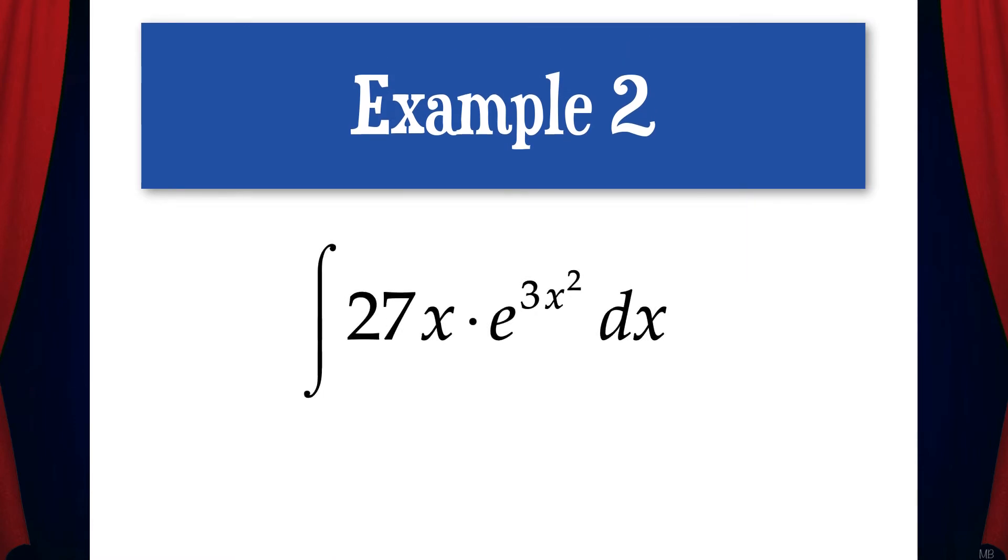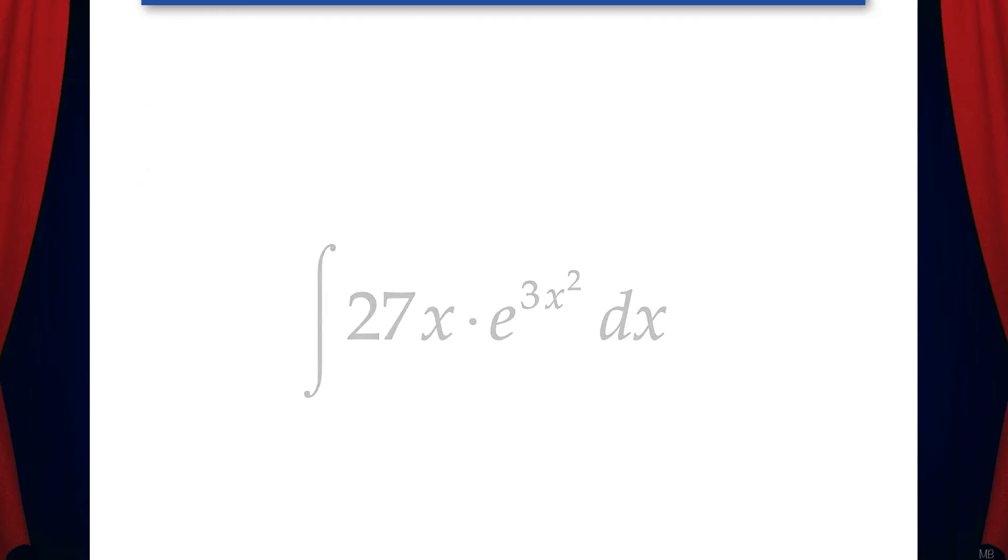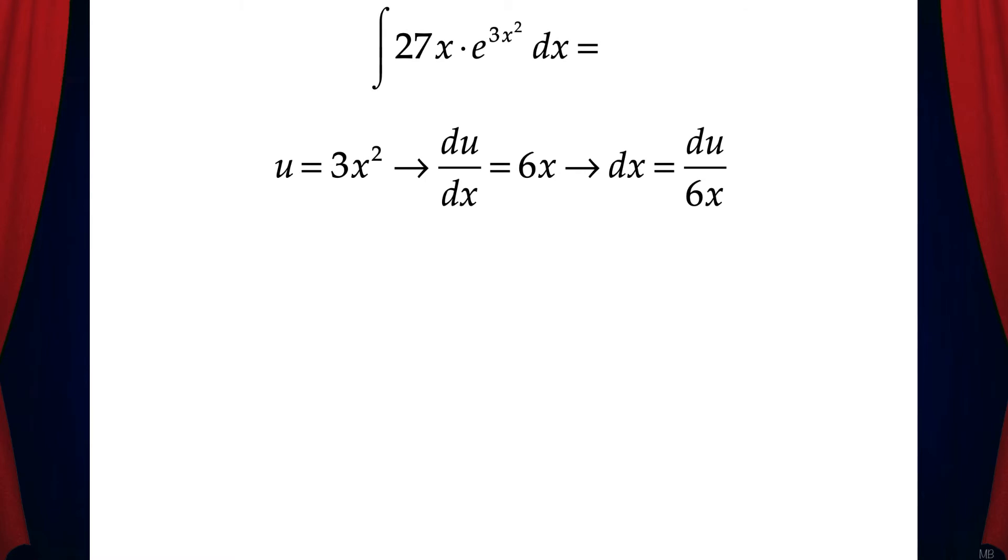Let's do another example. Here we have the integral of 27x times e to the 3x squared dx. So let's solve this with u substitution. Here we'll let u equal 3x squared. Then we'll find du dx, which is 6x. Then we'll solve for dx, which is du over 6x.